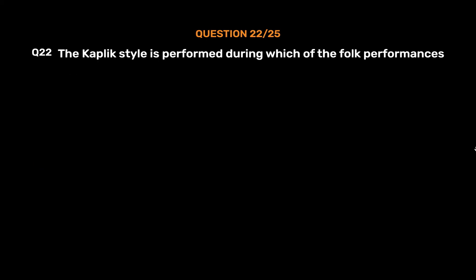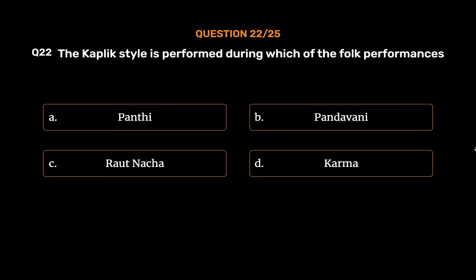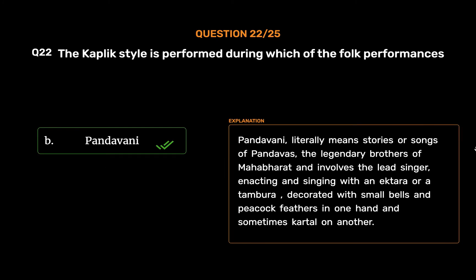Question No. 22: The Kaplik style is performed during which folk performance? Option A: Panthi. Option B: Pandavani. Option C: Raut Nacha. Option D: Karma. The correct answer is Option B: Pandavani. Pandavani literally means stories or songs of the Pandavas, the legendary brothers of the Mahabharata. It involves the lead singer acting and singing with an ektara or a tambura decorated with small bells and peacock feathers in one hand, and sometimes kartal in the other.